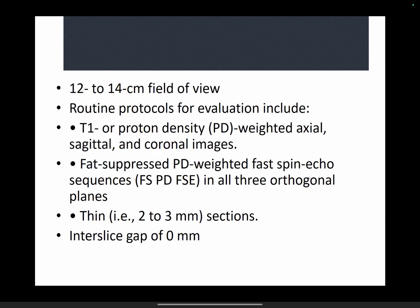Especially when doing ankle, foot, and wrist joints — if you have a slightly larger inter-slice gap, many ligaments will disappear within that gap. Make sure you have zero inter-slice gap. Take PDFs in all three orthogonal planes: axial, sagittal, and coronal — at minimum. Take one T1 coronal, one STIR coronal, and three PDFs. These are the bare minimum five sequences.